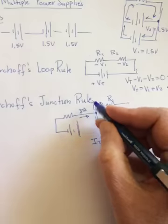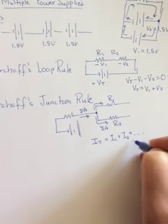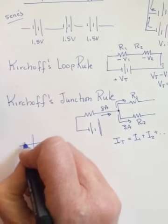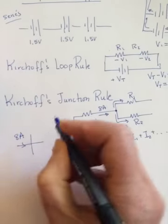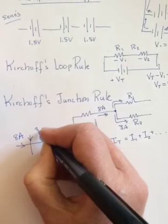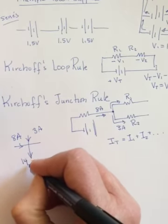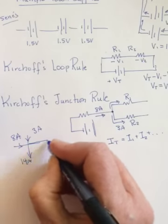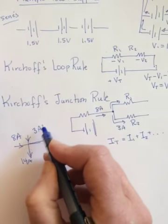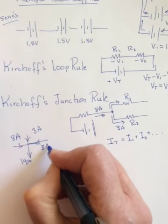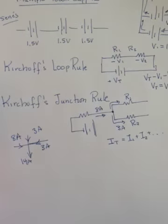So all it's saying is whatever is flowing into a junction has to come out of a junction. Now the one that seems to mess people up is if I said, okay, there's 8 amps going in here, and there's 3 amps going in here, and there's 14 amps coming out, what must be flowing through this part? Well, we have 11 going in and 14 coming out, so there needs to be another 3 going in, so 14 can come out.